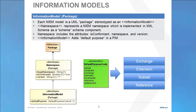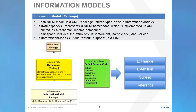NIEM information models are defined using UML packages. Packages collect combinations of classes, associations, and properties for a particular purpose. These are then stereotyped as a NIEM information model, which also includes the namespace concept. A namespace defines whether it is name conformant, its XML namespace string, and its version. Information models add a tag value that defines the purpose of the model, whether it's an exchange, an extension, a subset, a reference, etc.